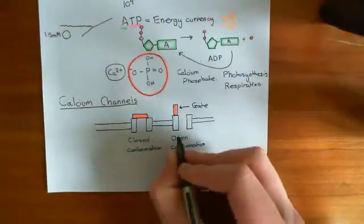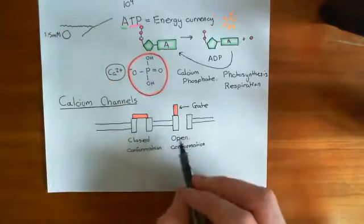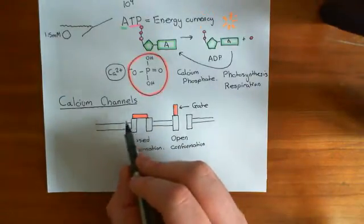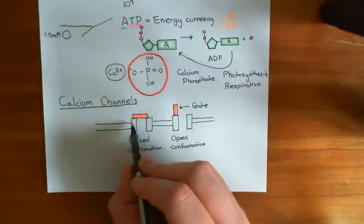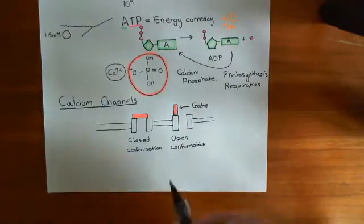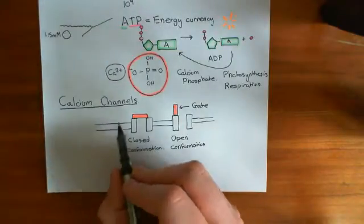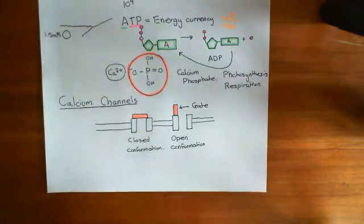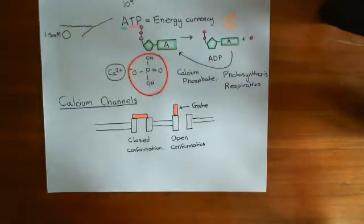When a channel opens — and there are multiple different things that can cause it to open — some of these channels are ligand-gated, so when a certain ligand binds to them, that will cause the gate to change conformation and open the channel. Some of them are voltage-gated, so when the electrical potential difference across the membrane is disturbed somewhat, that will cause the channel to open at a certain electrical potential difference across the membrane.